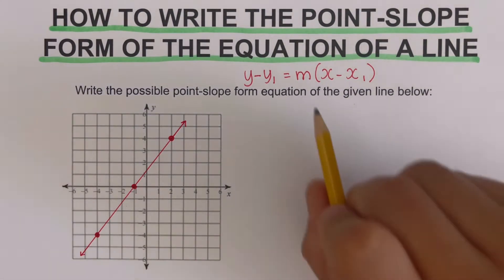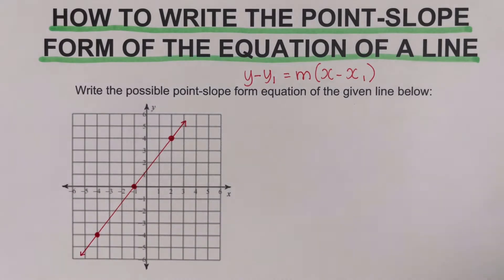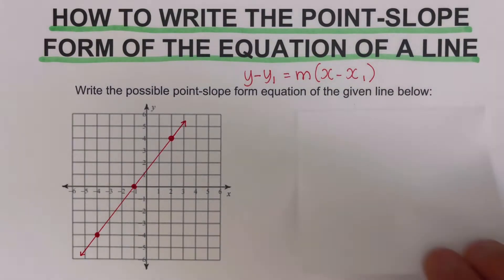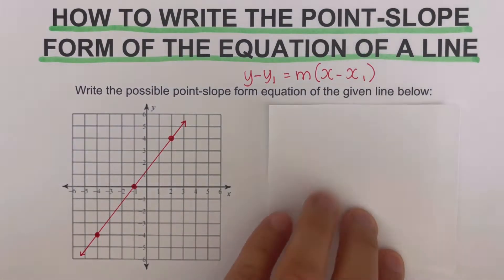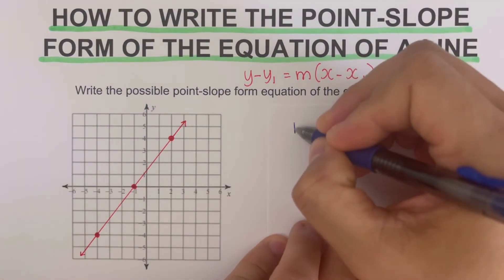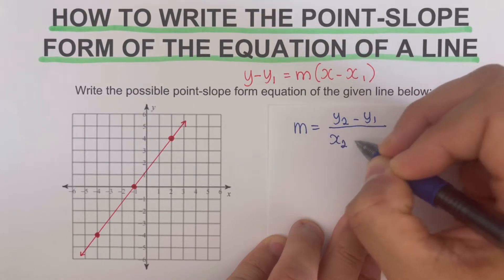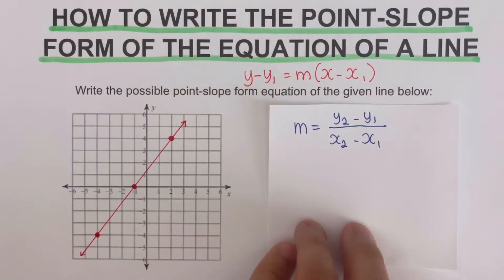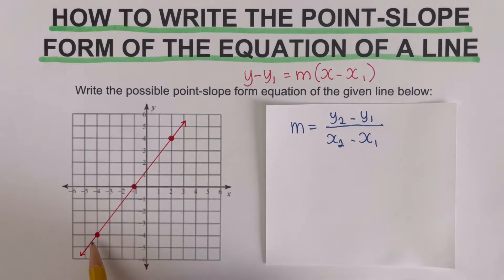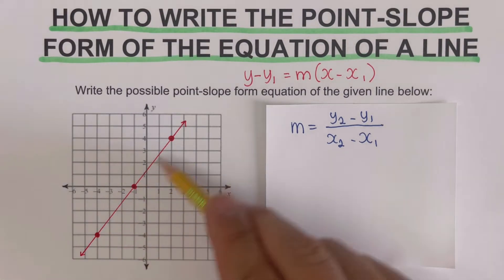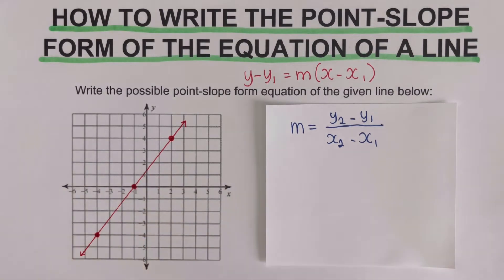We need to determine the slope of this line first. There are two ways — I'm going to show you the long way and the short way. The long method uses the slope formula: m equals y₂ minus y₁ over x₂ minus x₁. We're given three points on the graph but only need two to determine the slope. It doesn't matter which point you use because the slope along the line is the same.